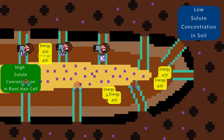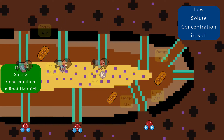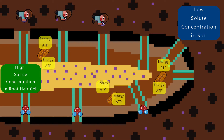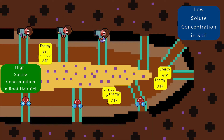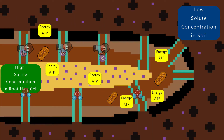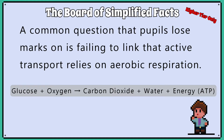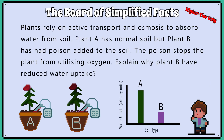Root hair cells also have lots of mitochondria, which release energy in the form of ATP via aerobic respiration to drive the active transport. A common question that pupils lose marks on is failing to link that active transport relies on aerobic respiration.